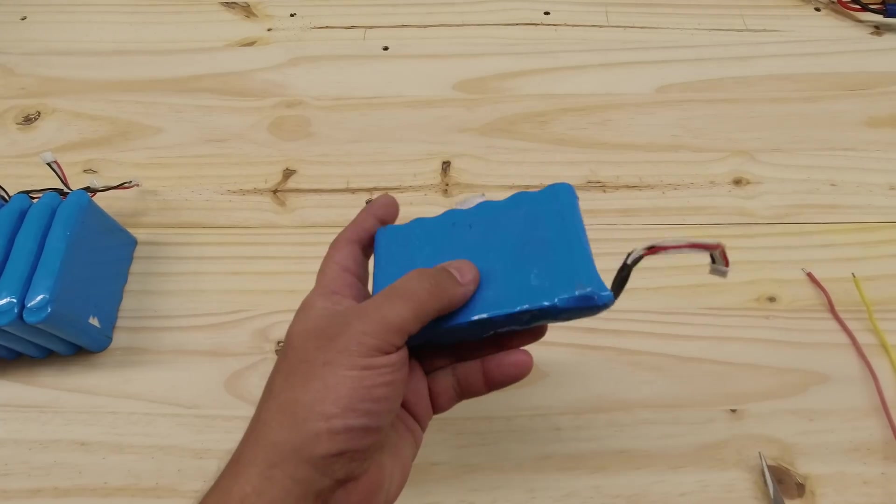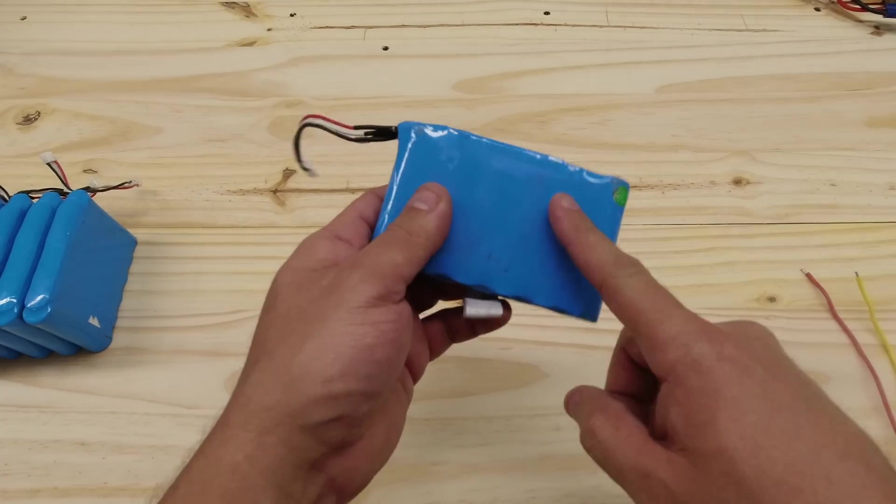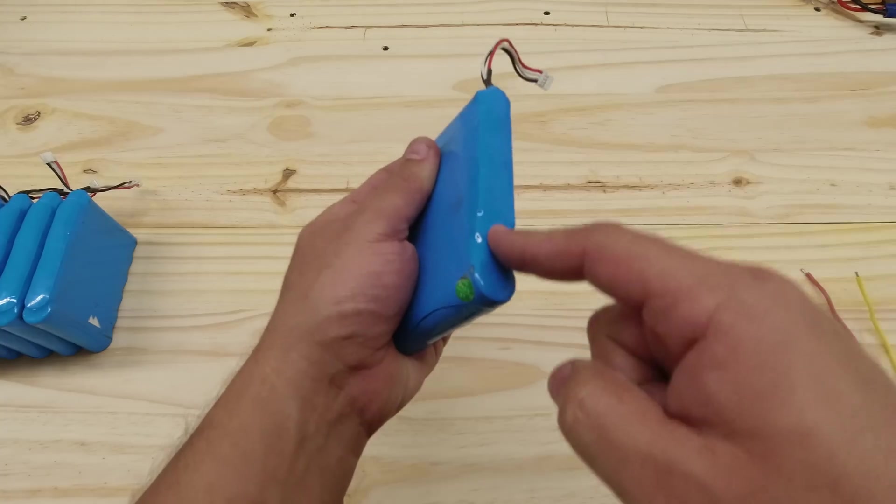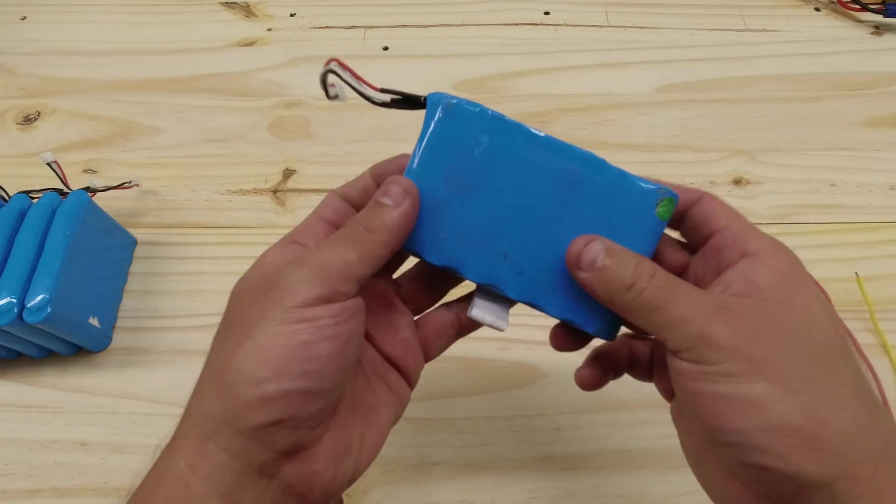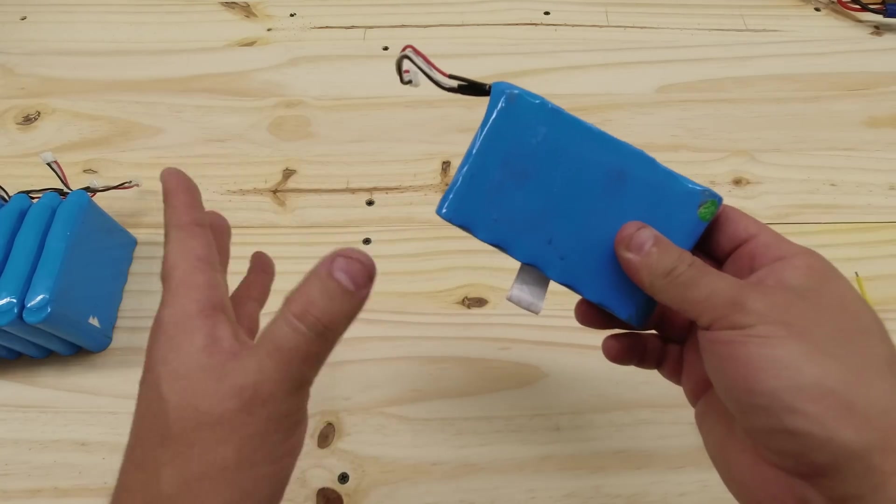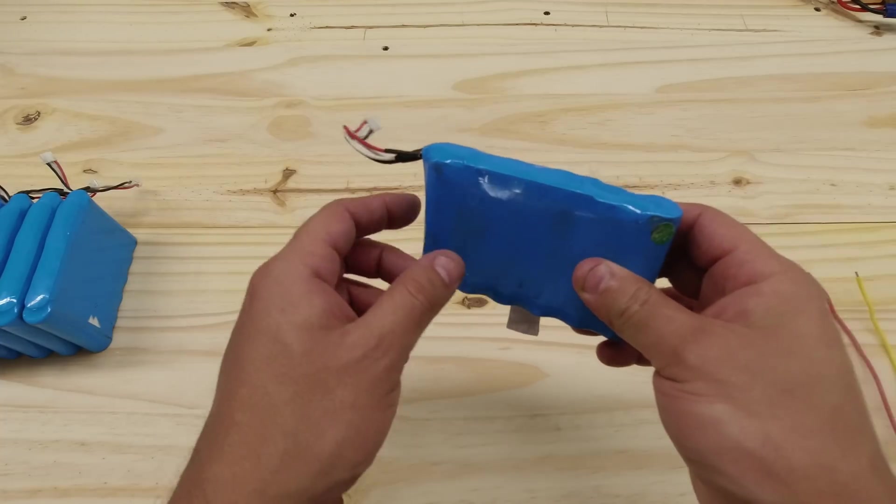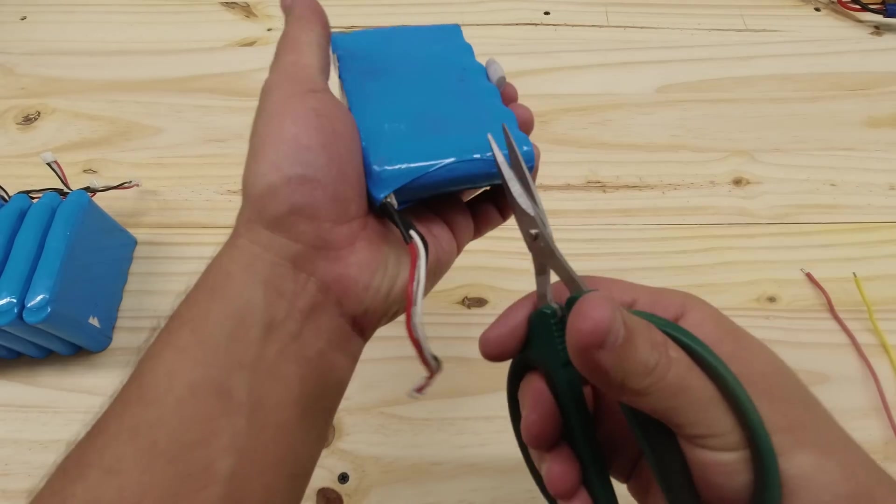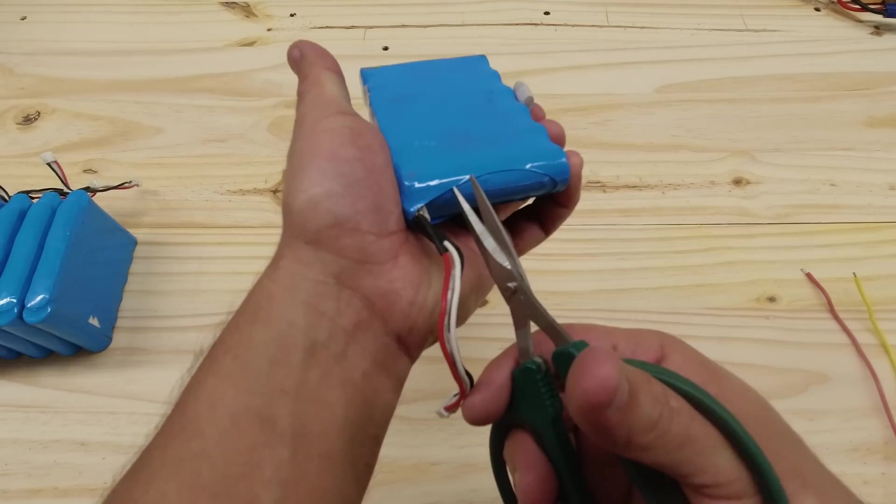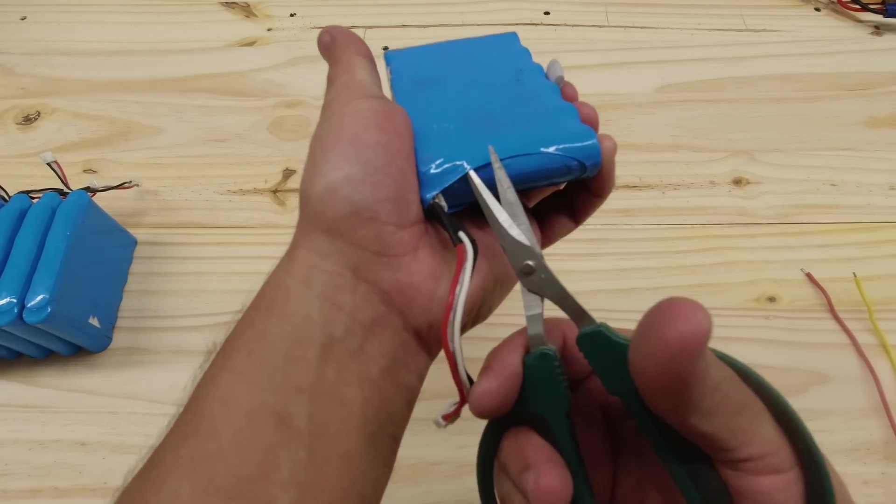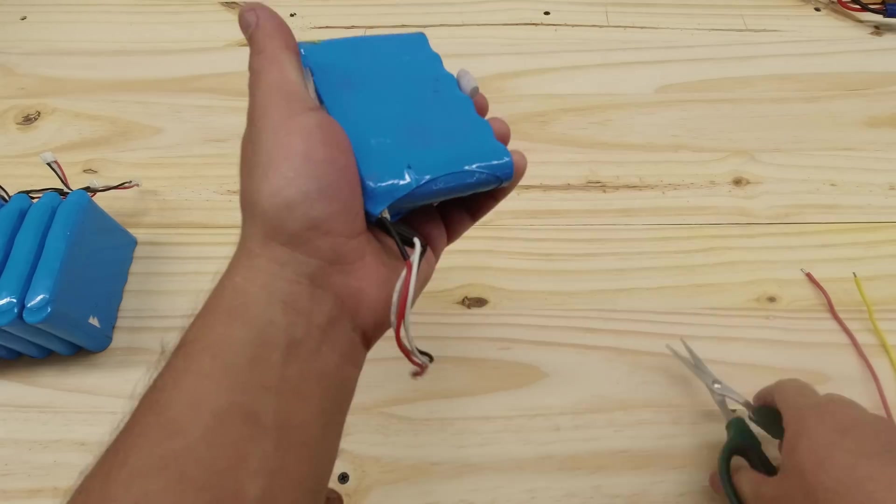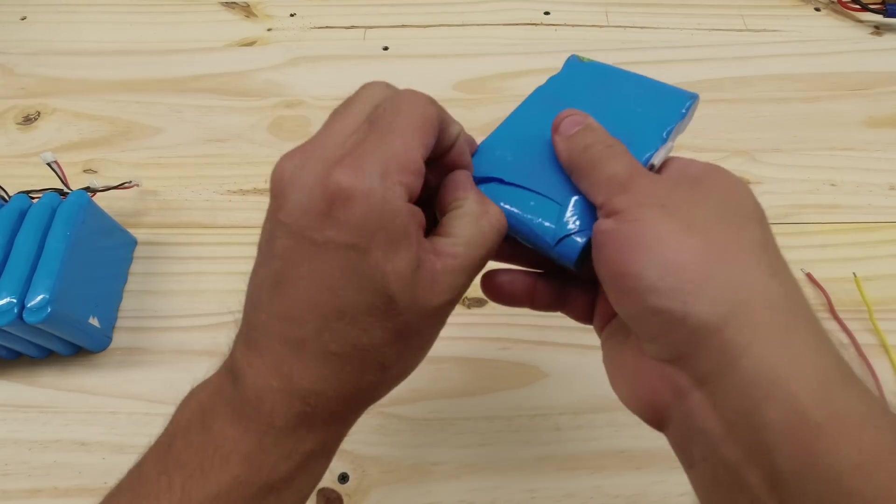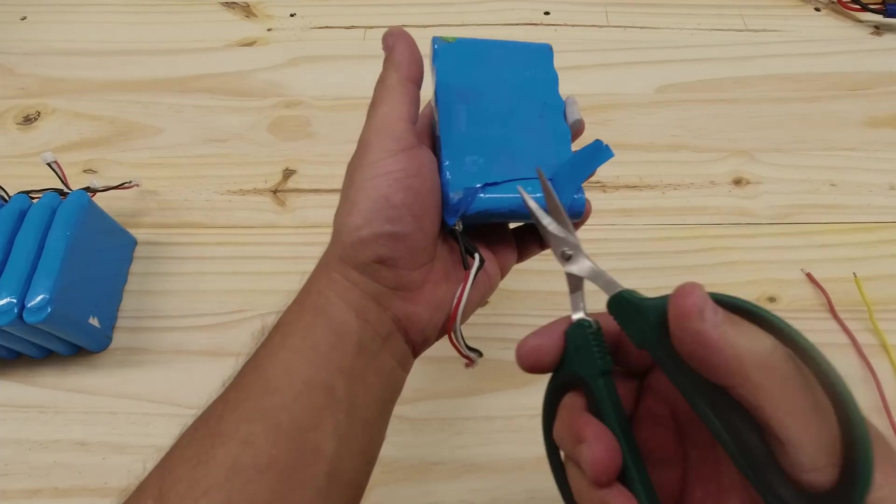First, you start by taking these apart. Unfortunately, you can't use them as they are because they have a really small and weak BMS in here. So in order for you to push any considerable amount of power, you have to break them apart. And breaking them apart is very easy. All you have to do is just cut this blue shrink tube. All you do is just start it like that, and then the rest becomes a lot easier.